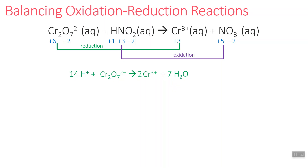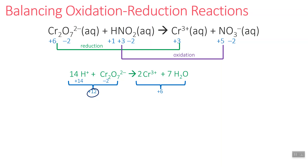Now that all atoms are balanced, we handle the electrons by adding up charges on both sides. The 14 H+ ions give plus 14 and the chromate ion gives minus two, totaling plus 12 on the reactant side. On the product side, two Cr3+ ions give plus six, and water is neutral. To bring plus 12 down to plus six, we need to add six electrons to the reactant side.